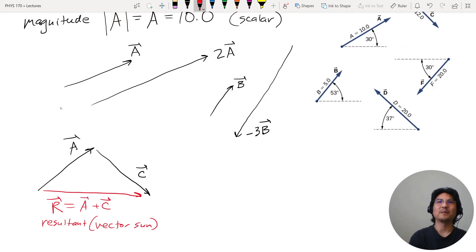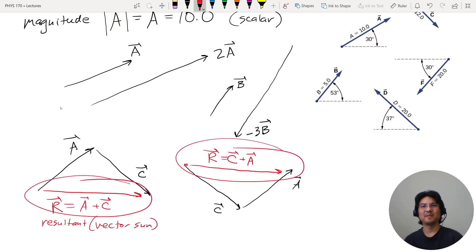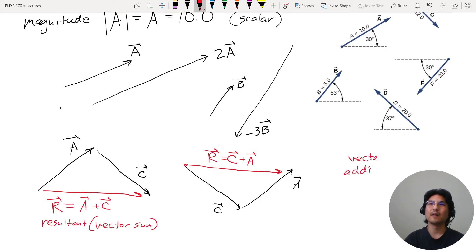And it turns out that addition commutes, so you could also go C plus A. And if you add these together, I started here, I ended here, the resultant is C plus A. It turns out these are the same. Addition commutes. So that's convenient.